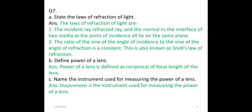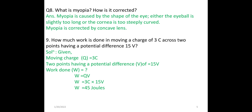Name the instrument used for measuring the power of a lens. A dioptrometer is an instrument used for measuring the power of a lens. What is myopia and how is it corrected? Myopia is caused by the shape of the eye — either the eyeball is slightly too long or the cornea is too steeply curved. Myopia is corrected by using a concave lens.